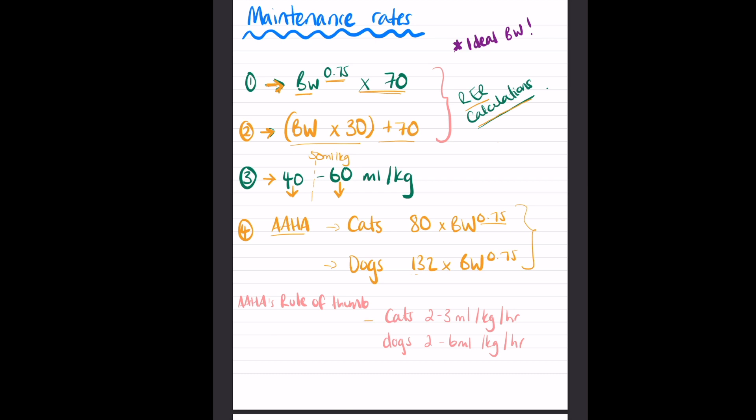The AHA rule of thumb really is kind of here, and they say cats it's roughly 2 to 3 mls per kilogram per hour, and for dogs it's 2 to 6. Most of my calculations when I work them out with the body weight to the power of 0.75 times 70 - so our number one there - they tend to be at the lower ranges here rather than higher.